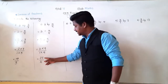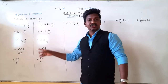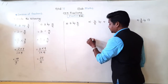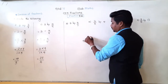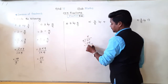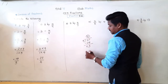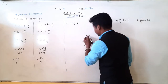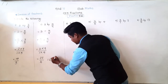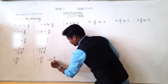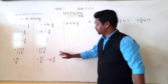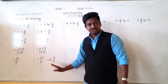In another way, since it is an improper fraction, we can convert it into a mixed fraction. If we divide 27 by 4: 4 sixes are 24, remainder is 3. So the answer is 6 whole 3 upon 4, meaning 6 is the quotient and 3 is the remainder upon the denominator 4. We have converted the improper fraction into a mixed fraction.